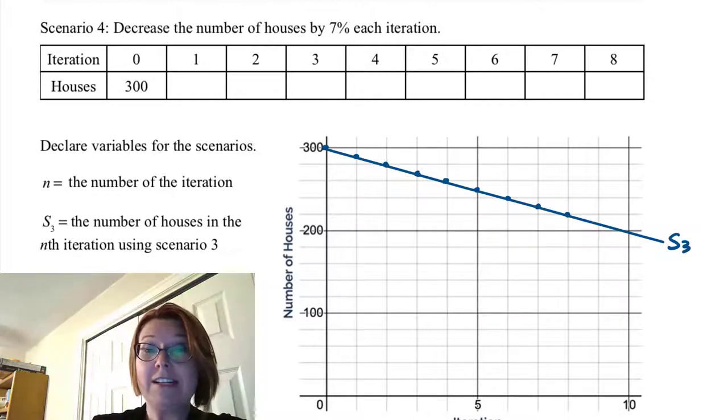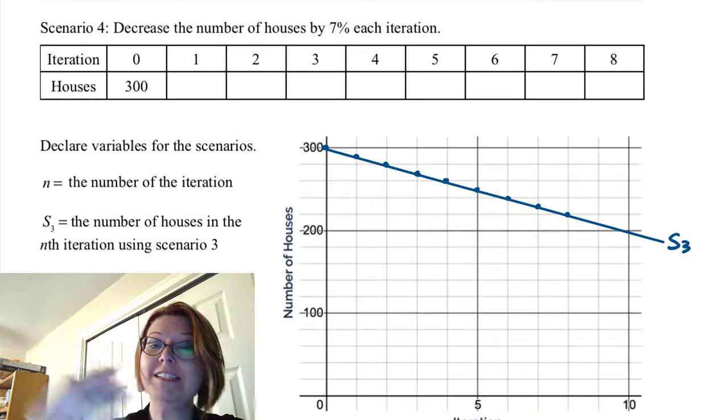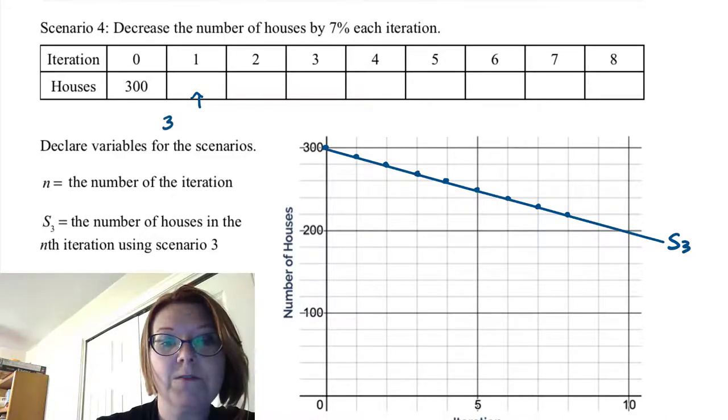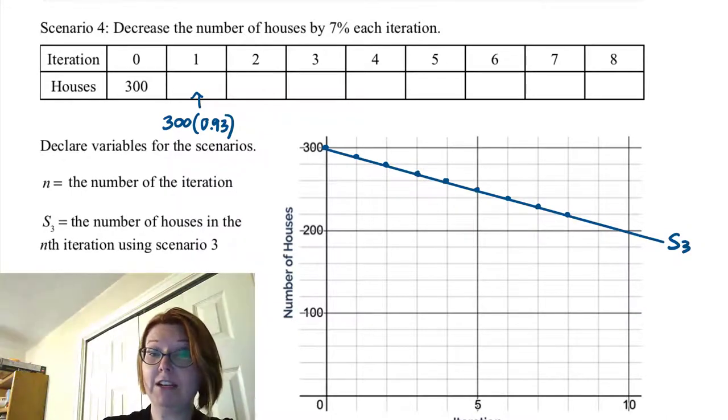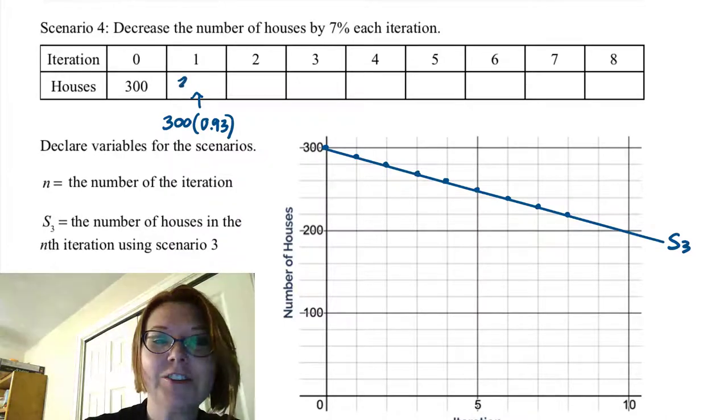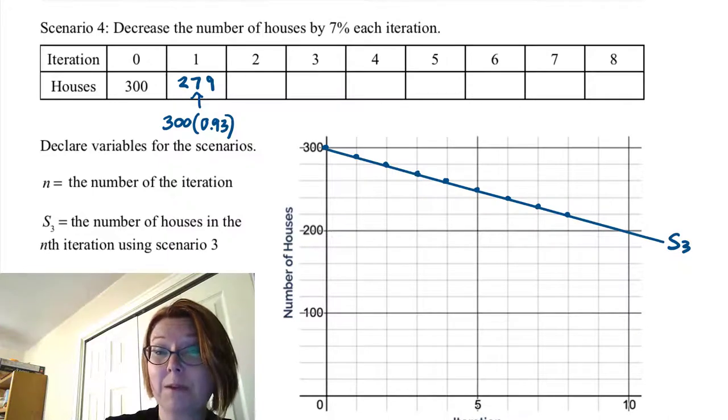Now the next one we're going to decrease the number of houses by 7% each iteration. And so when we calculate the first iteration, if we decrease by 7%, all we have left is 93%. So this first one, we would do 300 times 0.93. When we reduce by 7%, we have 93% left. If we do that calculation, we get iteration one is 279 houses, so a bit less than what we had in scenario three.